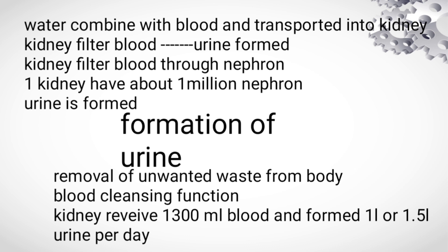Now we will see how urine is formed. The kidney will filter the blood through the nephron. The kidney works on a structural and functional unit called the nephron. In a kidney, there are about 1 million nephrons.